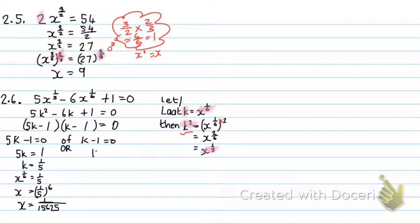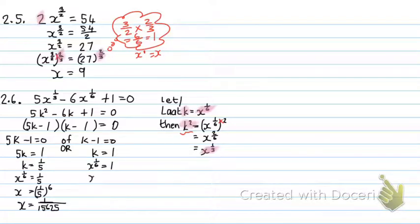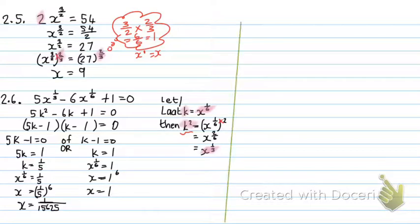On the other side, K equals 1. Since K was X to the power of 1 over 6, we have X to the power of 1 over 6 equals 1. Raising both sides to the power of 6: 1 to the power of 6 stays 1, so X equals 1.